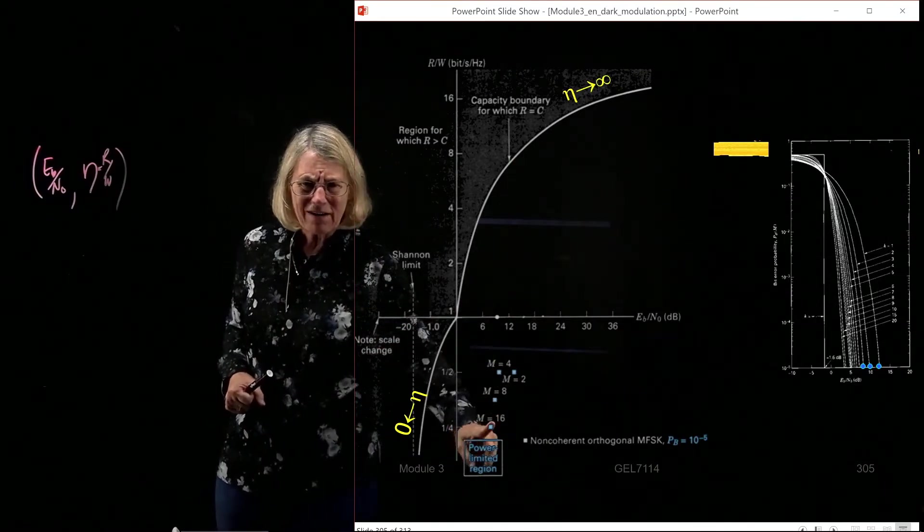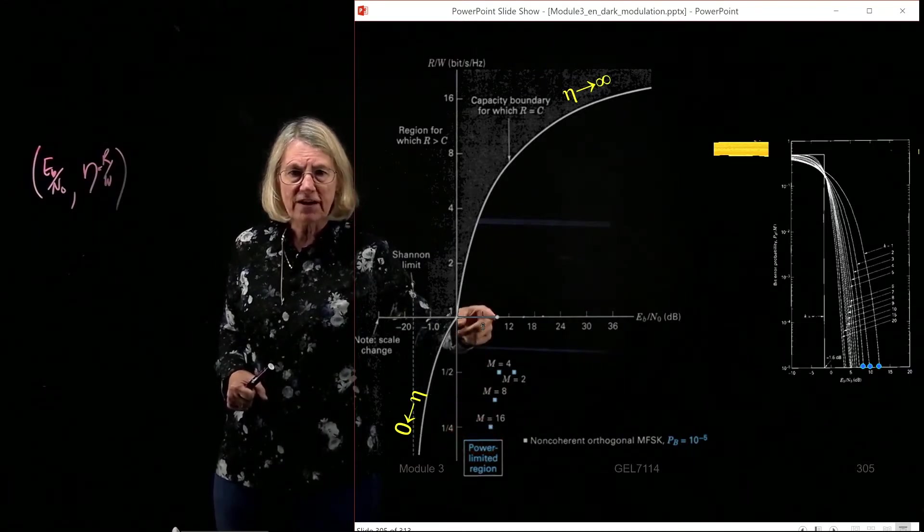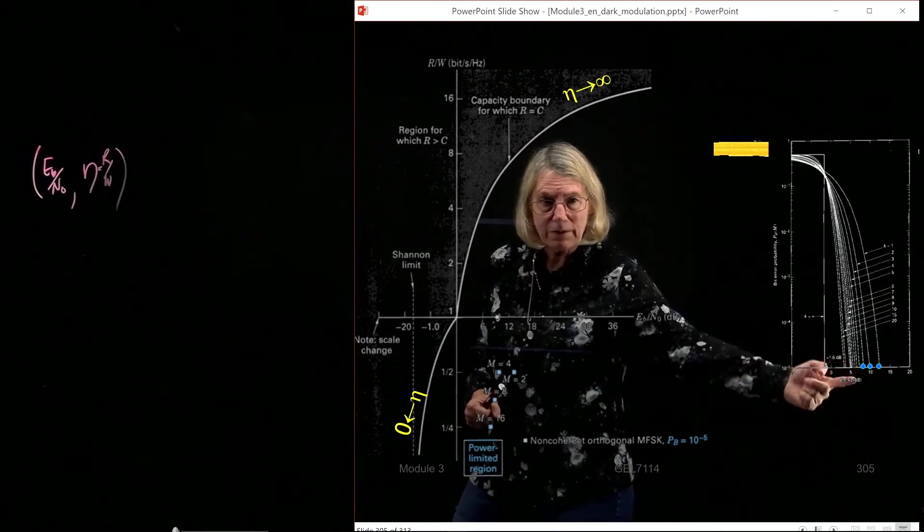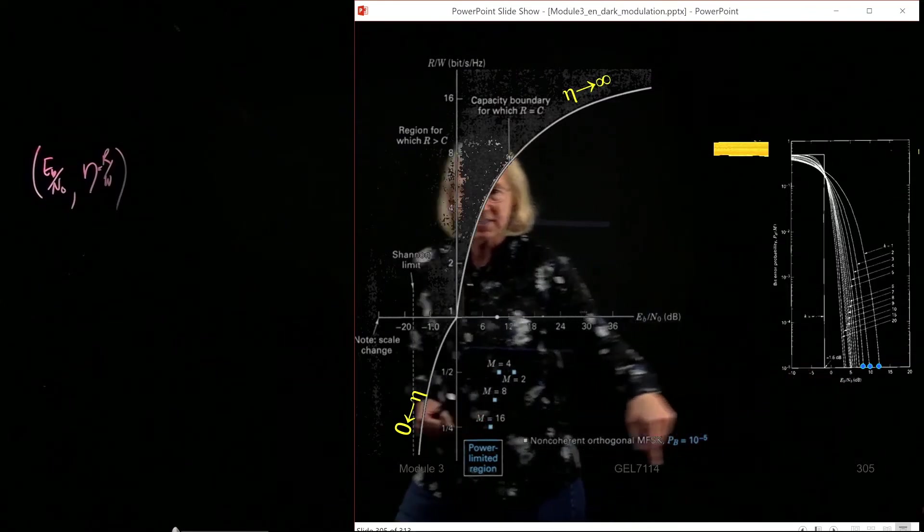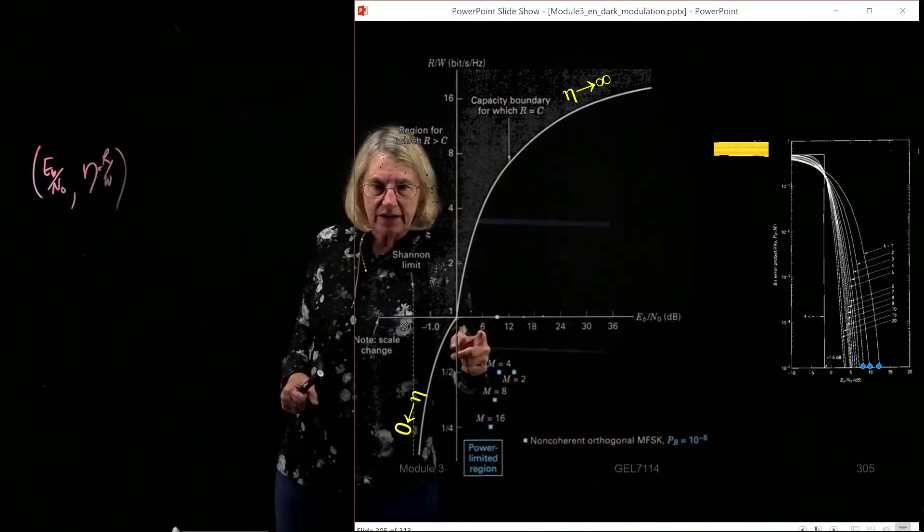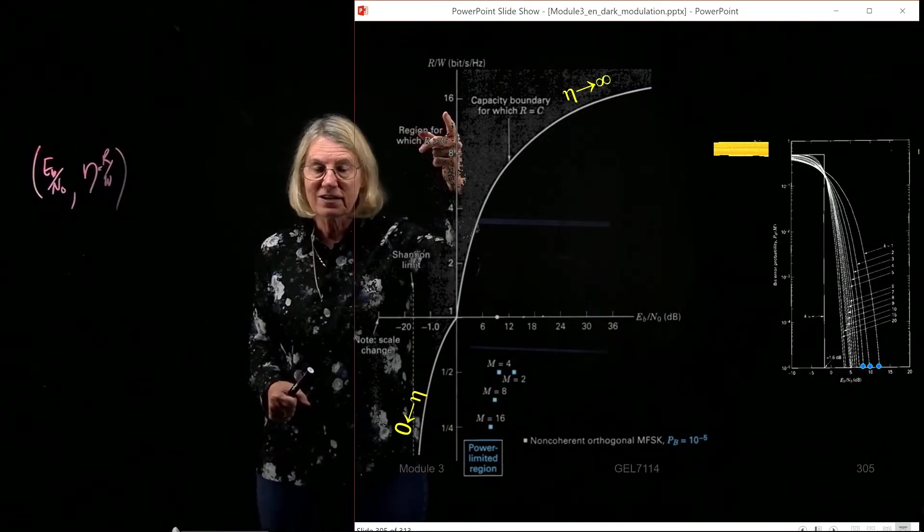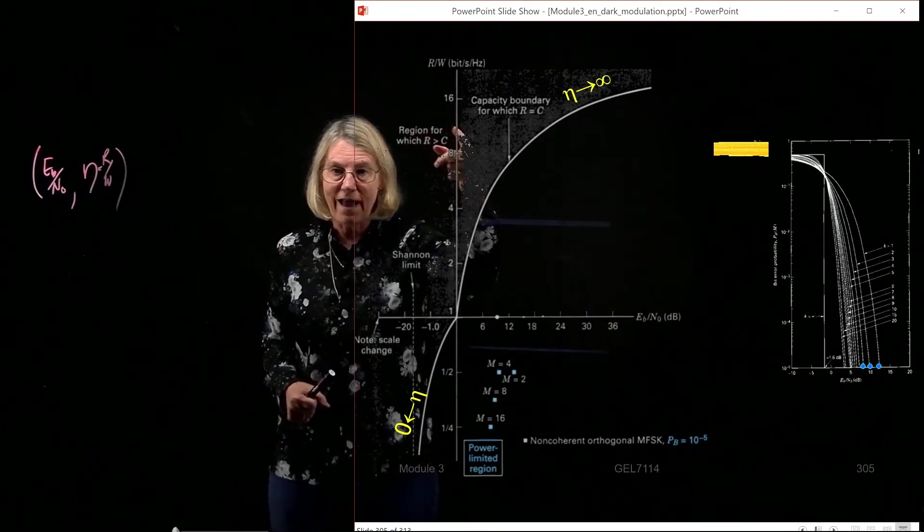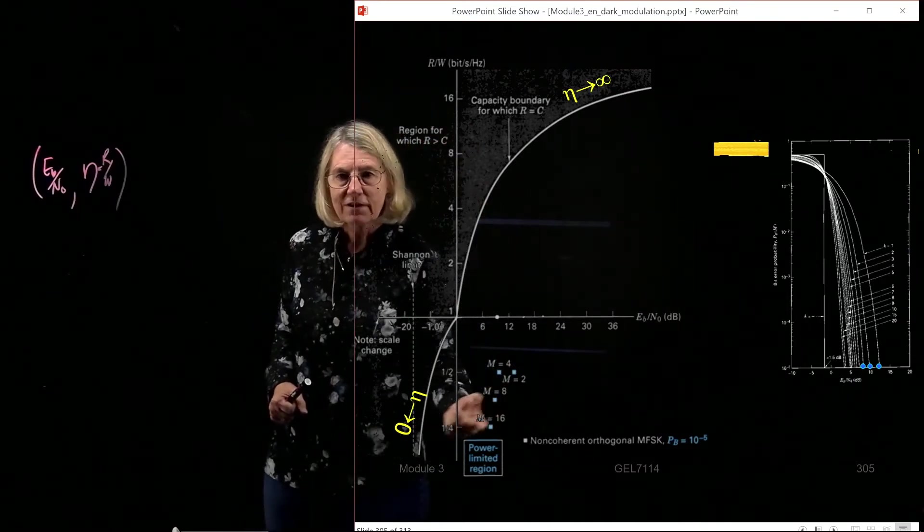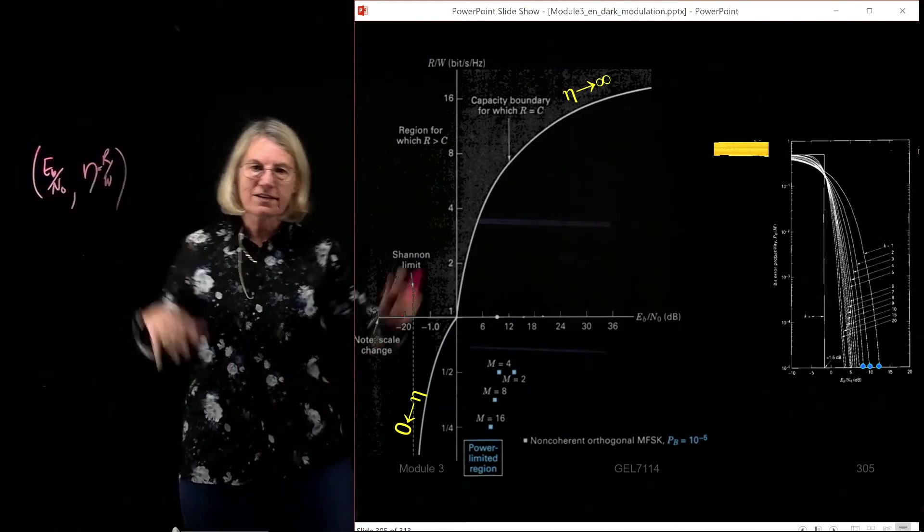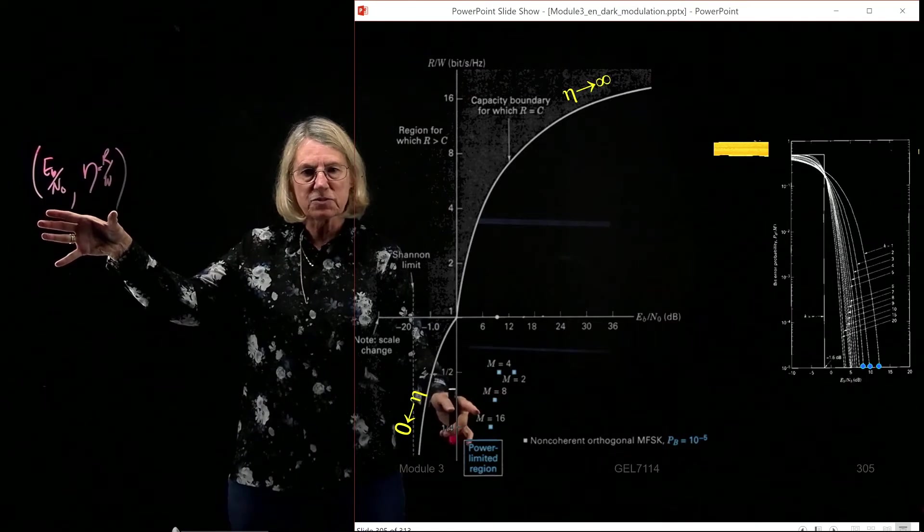So if I take this ordered pair, which is m equals 16, then on the Eb over N0 I would take the curve—the point here—what Eb over N0 did I need to get 10 to the minus 5 for m equals 16? It'll give me a certain number here. And then I'll look up, okay, now what is the equation for the spectral efficiency for non-coherent? It's log 2 m over m, and that would give me this number. And so every point on this bandwidth efficiency plane has an Eb over N0 and a spectral efficiency.